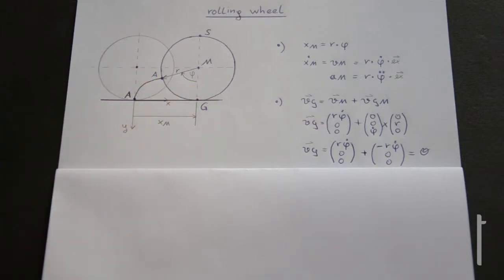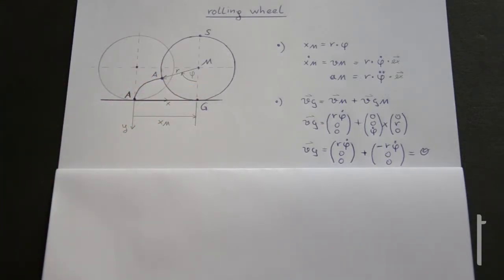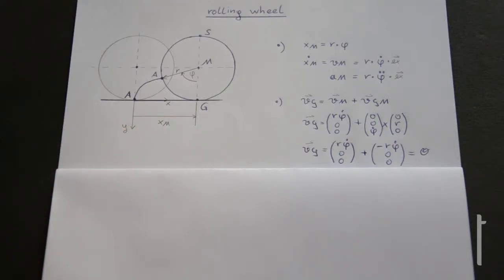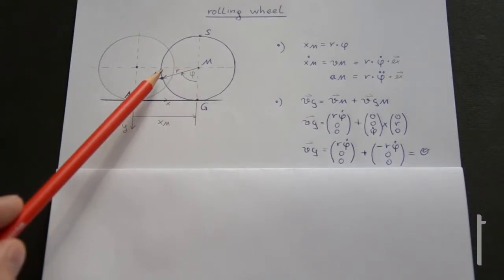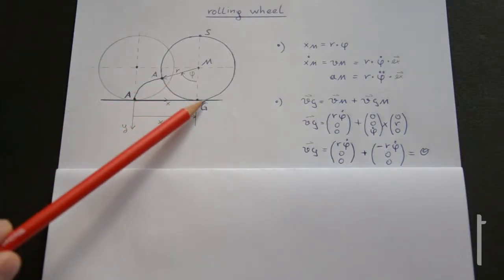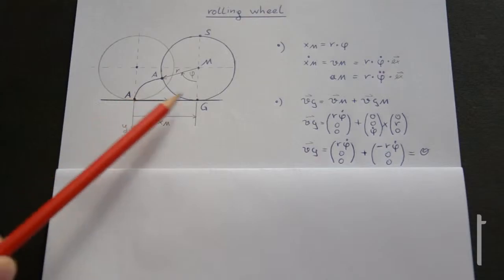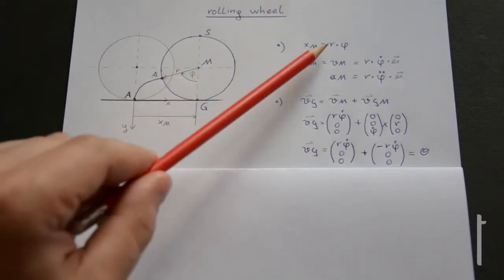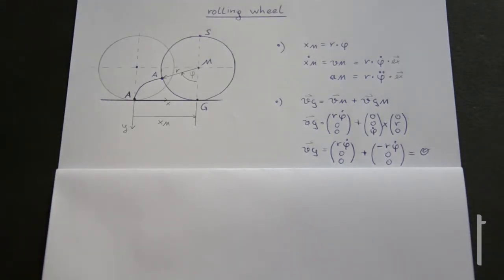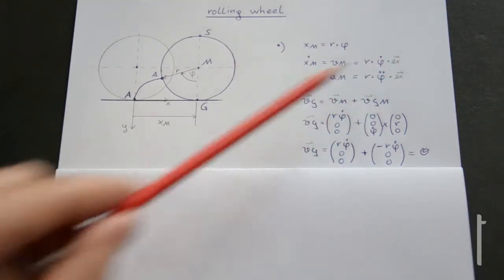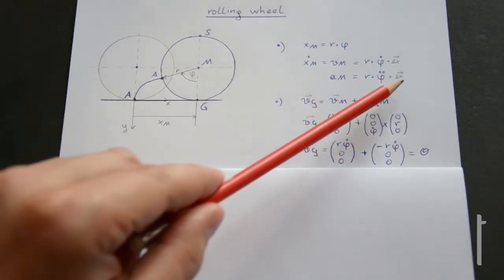Previously the wheel was here and now it is in this position. We want to know how big is the distance xm that M has moved in the x-direction. The arc length from G to A, when unrolled, equals xm. Since arc length equals r times phi, we get xm = r·phi, and therefore the velocity of M equals r·phi_dot in the positive x-direction, and the acceleration is r·phi_dot_dot in the x-direction.